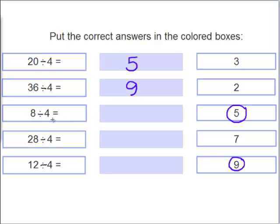8 divided by 4 equals what? Very good. 2. 8 divided by 4 equals 2. 28 divided by 4. What does that equal? Yes, 7 straight across. And 12 divided by 4 equals 3.